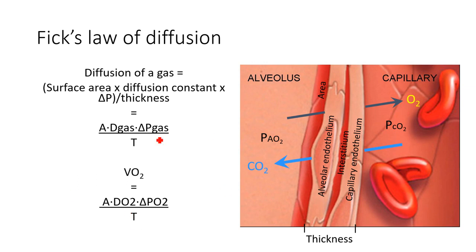So if you look here, surface area, diffusion constant, and pressure gradient - as any of those numbers go up, the rate of diffusion goes up. However, if we have a greater thickness or a greater distance, the rate of diffusion goes down.